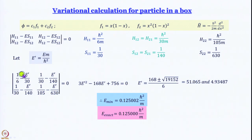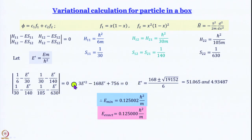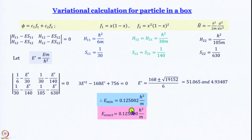The secular determinant |1/6 - E'/30, 1/30 - E'/140; 1/30 - E'/140, 1/105 - E'/630| = 0 expands as a quadratic equation with two roots: 51.065 and 4.93487. The lower value is the ground state energy. Writing this in terms of ℏ²/m and comparing the minimum energy value with the exact energy obtained earlier, the agreement is excellent — the difference appears only at the sixth decimal place.